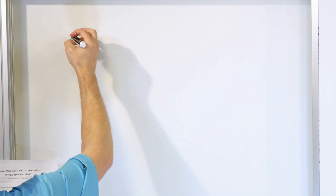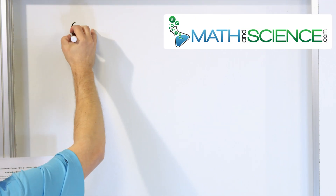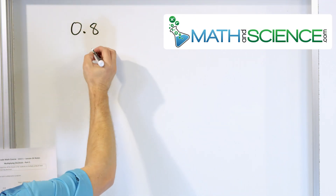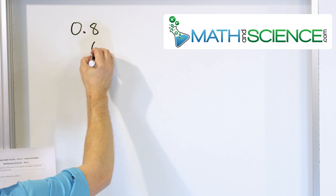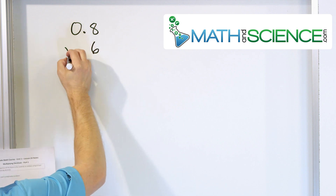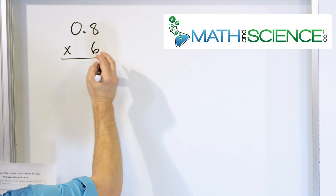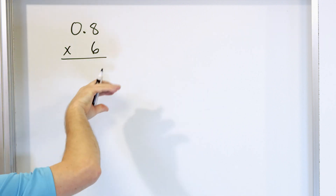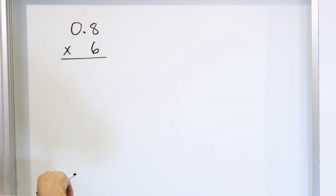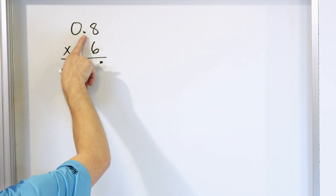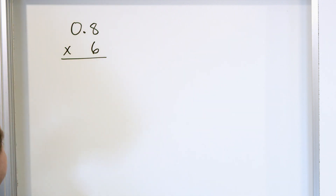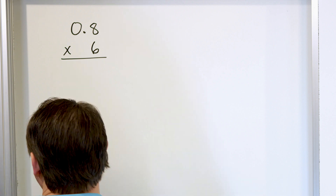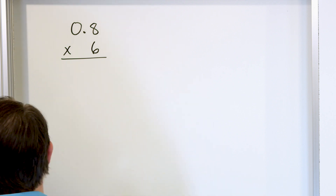Let's take a look at a simple problem: 0.8, and we're going to multiply that times 6. Notice that I have a 0, an 8, and a 6, and I push everything to the right as usual, but I'm going to ignore the decimal point completely until the final answer. I'm going to pretend it's not there.